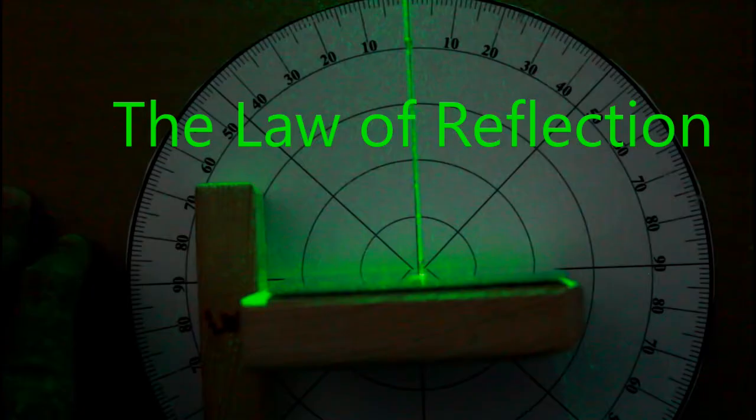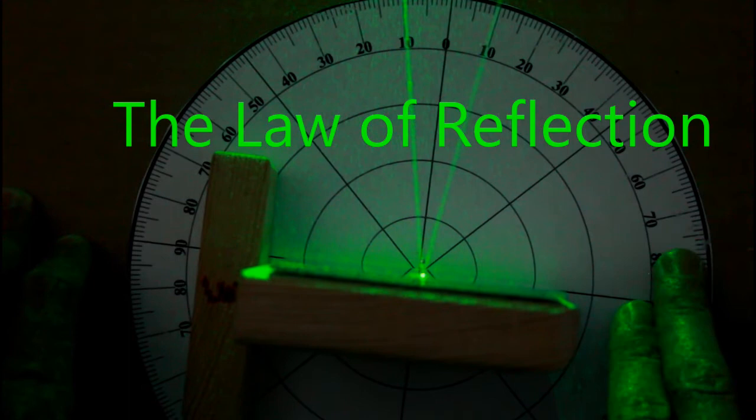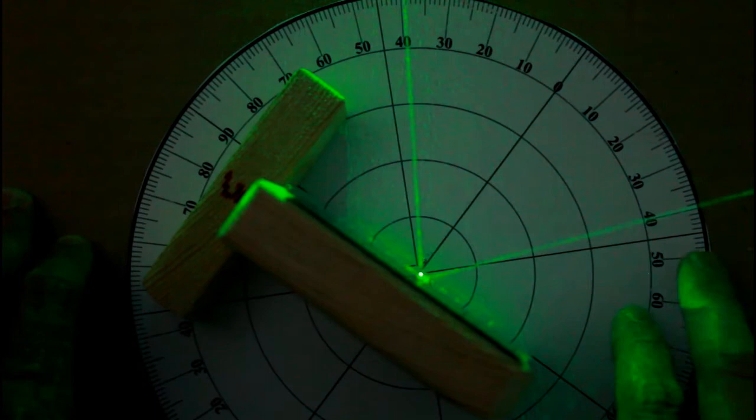The law of reflection says fairly simply that when a wave hits a boundary and reflects off, it will reflect at the same angle that it hit the boundary at. The angle that it hits at we call the angle of incidence. The angle it reflects at is the angle of reflection. And by convention, we measure both of those angles not from the surface itself, but from a line perpendicular to that surface called the normal.